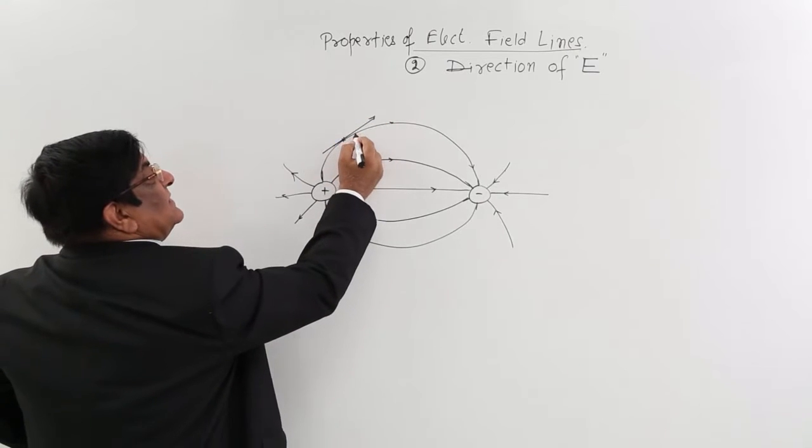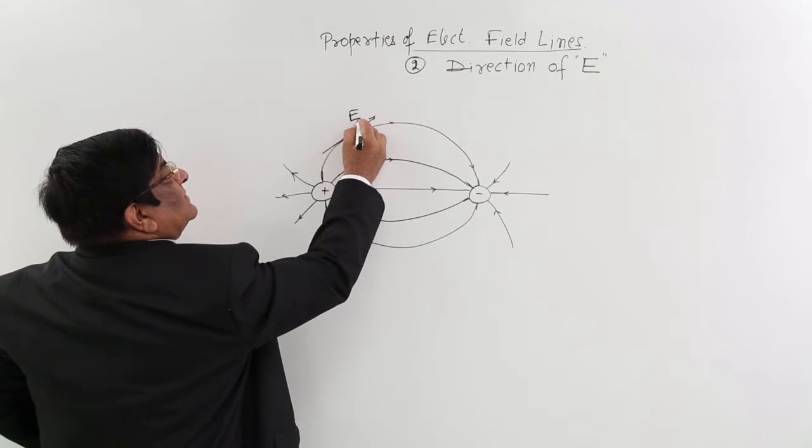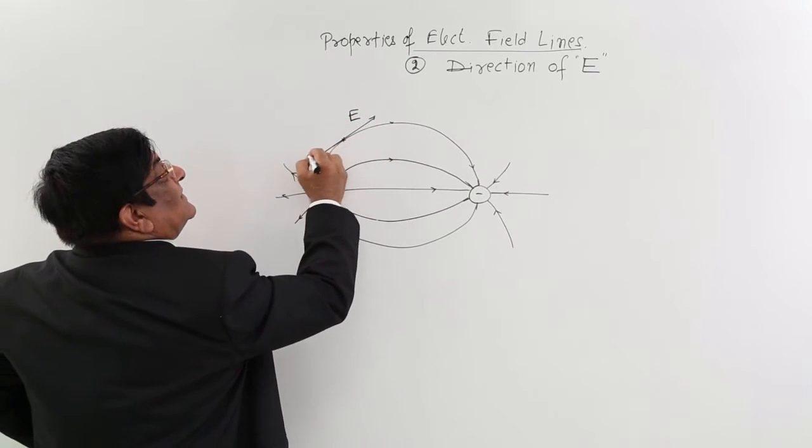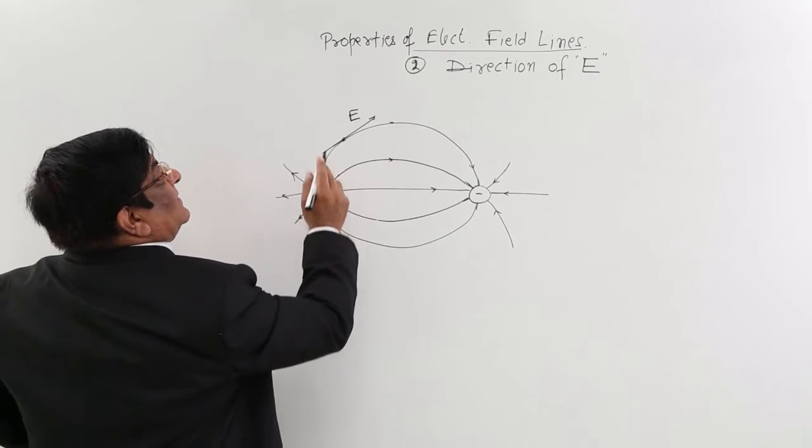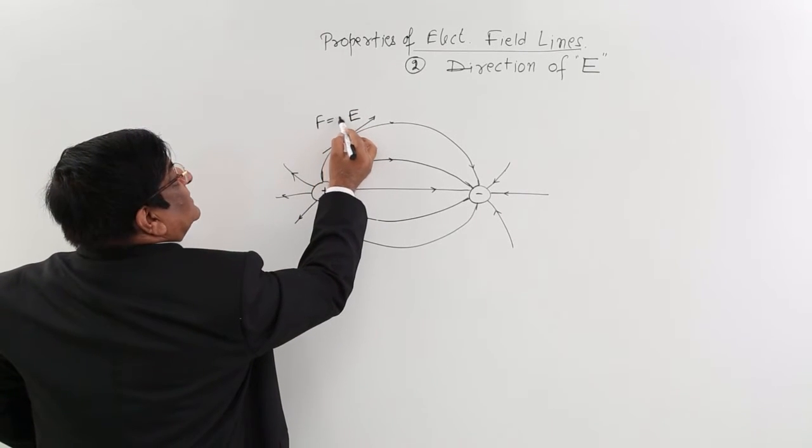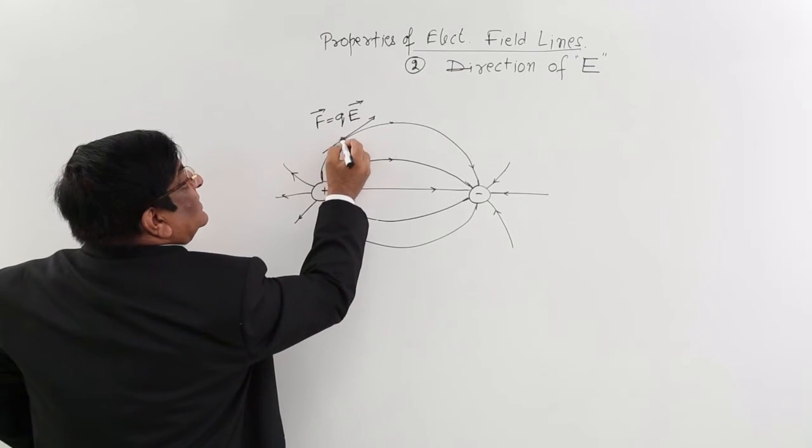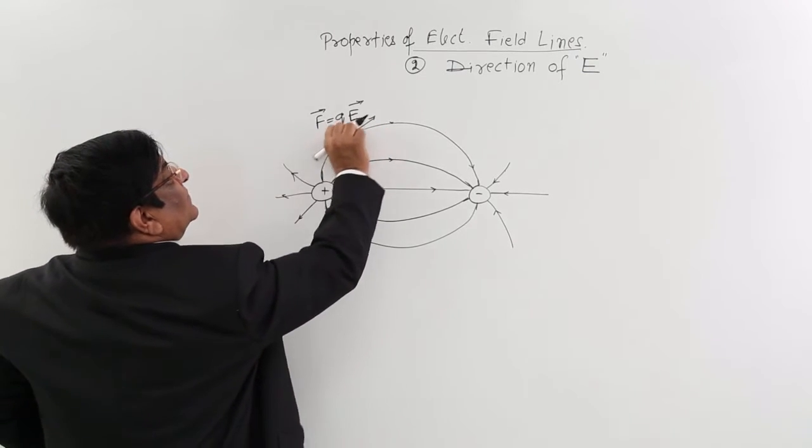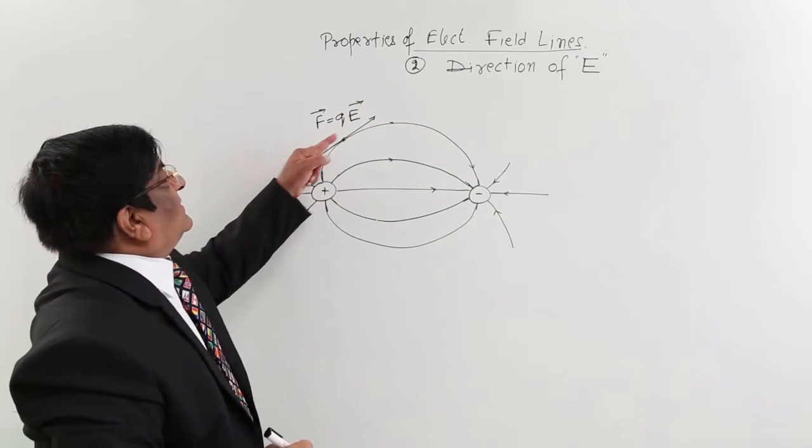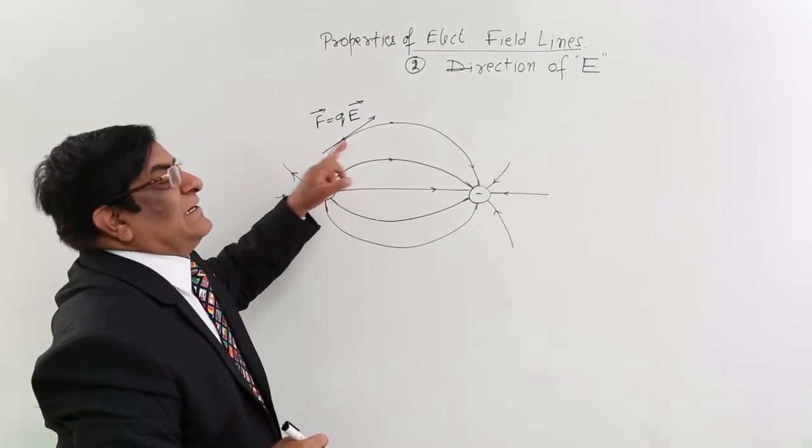This tangent represents electric field at this point direction wise and if we go for force then force is equal to Q into E. So if I place a Q here, it will experience a force in this direction because this is direction of electric field at this place.